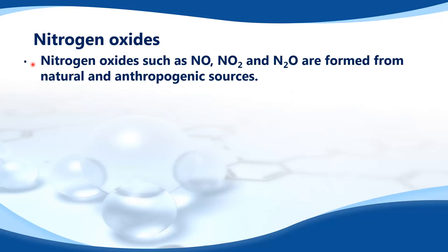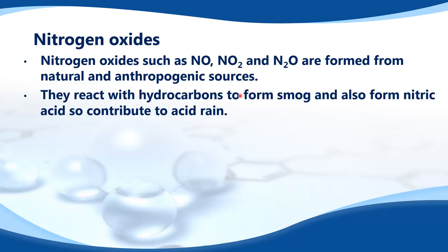Nitrogen oxides such as nitrogen monoxide, nitrogen dioxide, and dinitrogen oxide are formed from natural and anthropogenic sources. They react with hydrocarbons to form smog and also form nitric acids, contributing to acid rain.